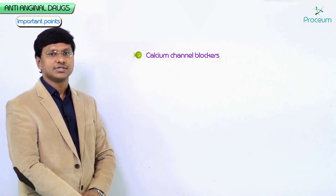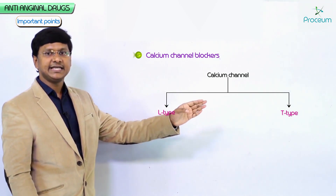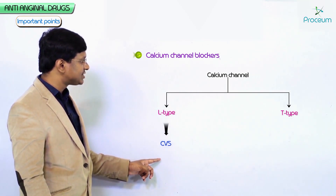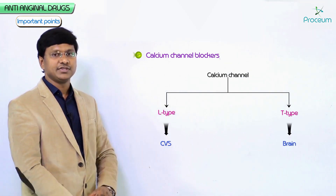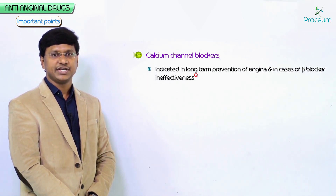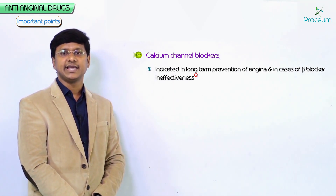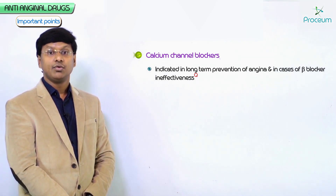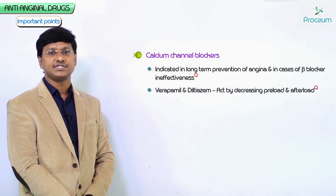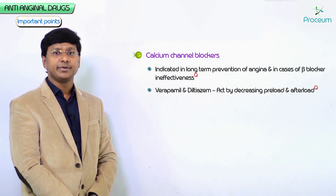For calcium channel blockers, there are two types of channels: the L-type channel, present in the cardiovascular system, and the T-type channel, present in the brain. Calcium channel blockers are indicated for long-term prevention of angina or in case of beta blocker ineffectiveness. Verapamil and diltiazem are used in angina treatment and act by decreasing both preload and afterload.